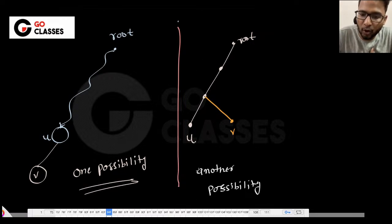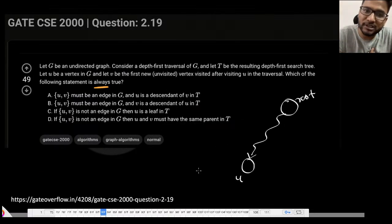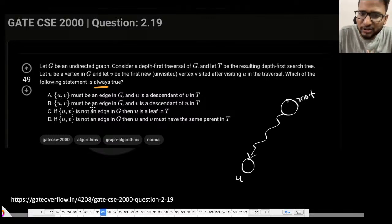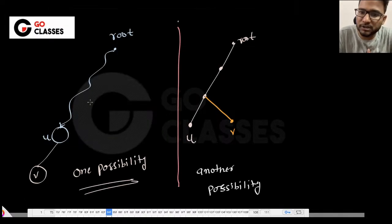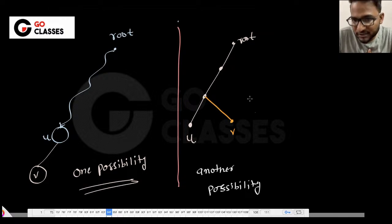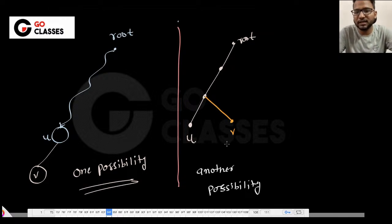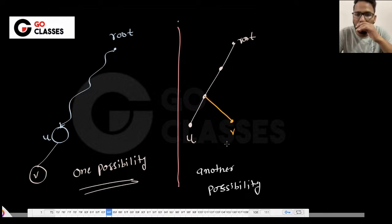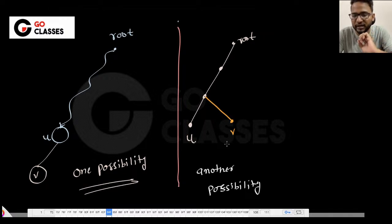Looking at the options, they are saying U-V must be an edge. I don't think that is the case, because that second possibility — where you backtrack and visit V elsewhere — makes options A and B false. So it is not necessary that U-V is always an edge. If U-V need not be an edge, what else can I say?